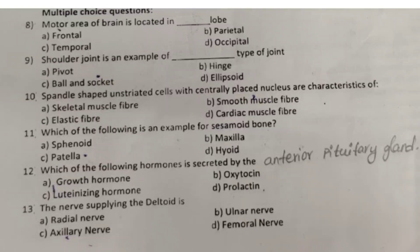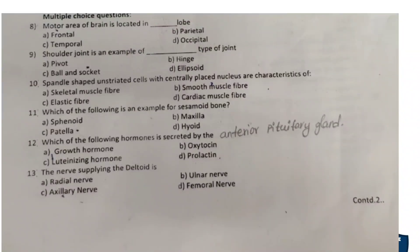Question 13: The nerve supplying the deltoid muscle is: A. radial nerve, B. ulnar nerve, C. axillary nerve, D. femoral nerve. The answer is C — axillary nerve. To summarize the MCQ answers: Q8 — frontal lobe; Q9 — ball and socket; Q10 — smooth muscle fibers; Q11 — patella; Q12 — oxytocin (not secreted by anterior pituitary); Q13 — axillary nerve.